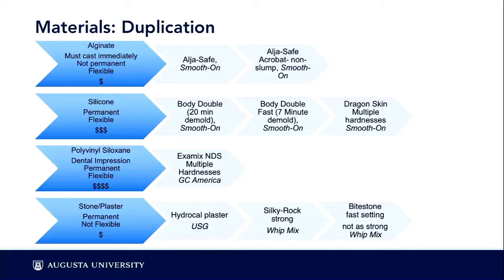Silicone is another method for duplicating, but very expensive — only use it if you want to cast many copies. Body Double and Dragon Skin cure very fast, making for quick duplication. Polyvinyl siloxane is a dental impression material — sterile and great for medical uses, for casting teeth, and what I use for facial prosthetics — but it's very expensive, so I don't generally recommend it as a matter of course. Alginate or silicone are better everyday choices.